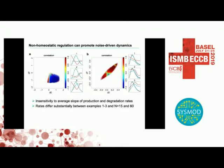Next is a similar plot where I used the population average slope of the production and degradation rate to characterize this parameter space. The color is just population average correlation. The pictures for assuming 15 molecules or 60 molecules are quite different, and the results are quite contradictory — number three is going up and number one is going down, but both fit the data quite well.